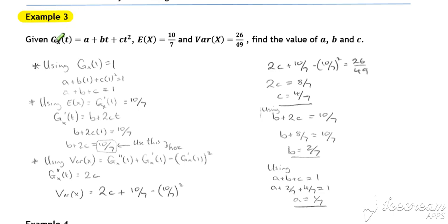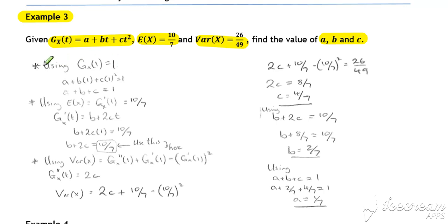In Example 3, we've been given our probability generating function but with some unknowns. We've been told the expected value of X and the variance of X, and we've been asked to work out the three unknowns a, b, and c. Our first bit of information is that the PGF G_X(1) is equal to 1, so we substitute t=1 and equate to 1, giving us our first equation relating a, b, and c.